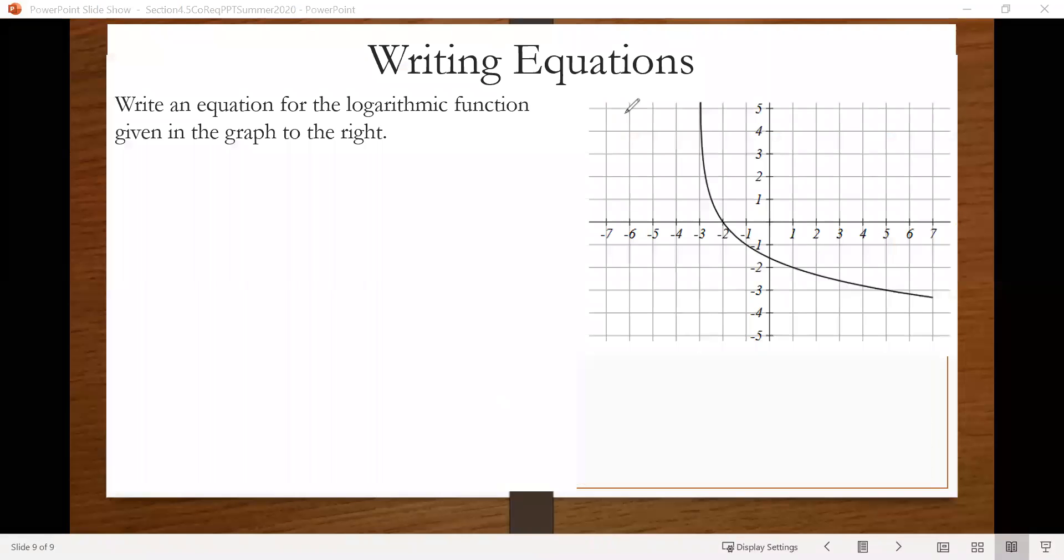And we're not told the name of it, so I'm just going to call it g of x. And it appears that this function has a vertical asymptote here at x equals negative 3. And notice that the graph shoots off to the right from that vertical asymptote. So because it goes to the right there, that clues us into which of our equations or formulas we need to use. And in this case, we're going to use g of x equals a times log of x minus b plus k.